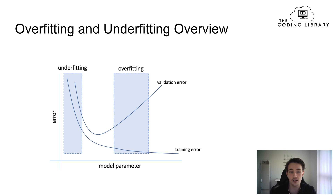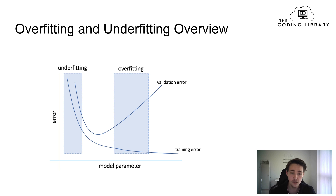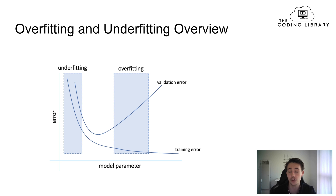Overfitting and underfitting are very important things to keep track of when training a neural network. They are among the most common errors that arise during training, so it's important to know what causes them and how to reduce them.